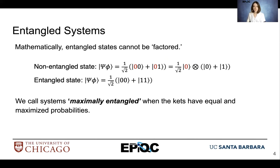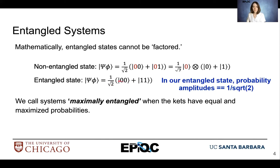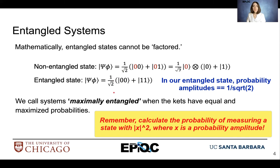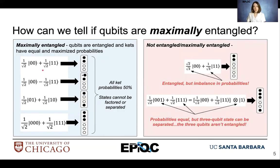We call systems maximally entangled when the kets have equal and maximized probabilities. In this case, we have two basis values within the state that will be 1 over square root of 2, giving us a 50% chance that we're in one state or another. To tell if qubits are maximally entangled, we look at the states in the blue box — all of these states are entangled, each basis state has the same probability, and it's the maximum possible: 1 over square root of 2. The visual representation shows that all kets have a 50% probability.